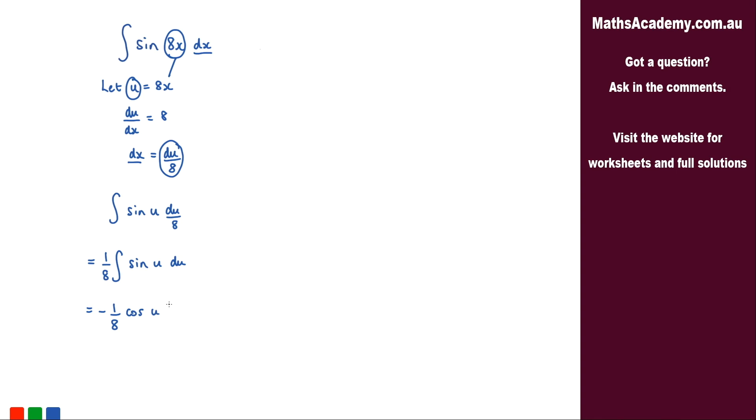And we know that u, well u is 8x. So we can substitute that back in. So we get negative 1 over 8 cosine of 8x. And then just add on the constant of integration.